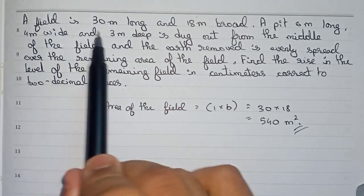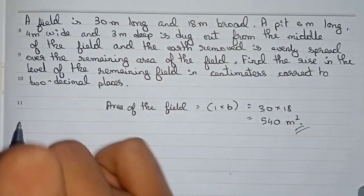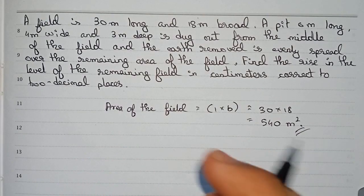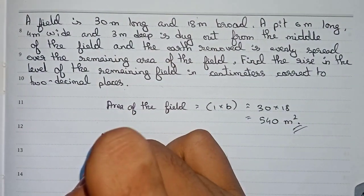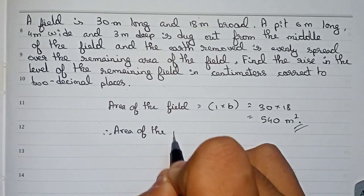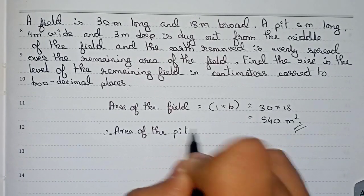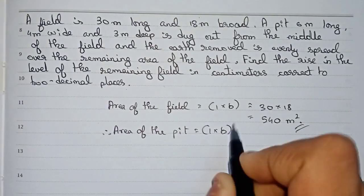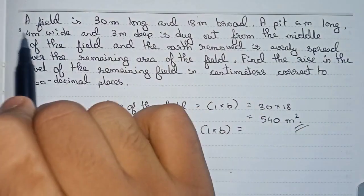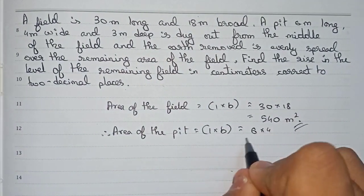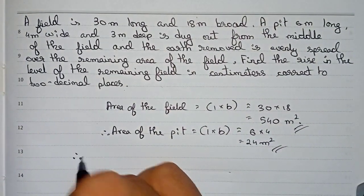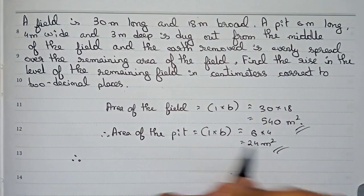Now it is mentioned the pit is 6 meters long, 4 meters wide, and 3 meters deep. We have to find the area and the volume both of the pit. Area of the pit means length into breadth, so length is 6 meters and breadth is 4 meters — 6 into 4 is 24 meters square.